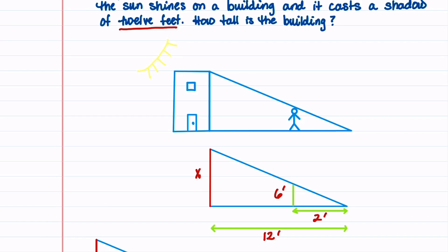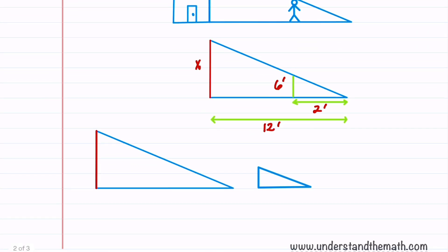Now what we're going to do is break these two triangles apart and label their corresponding angles and side lengths. So the larger triangle, we have x, and we have 12, and the smaller triangle, we have 6, and we have 2.